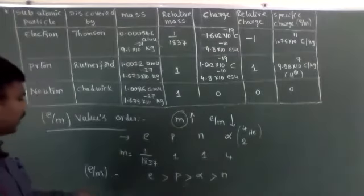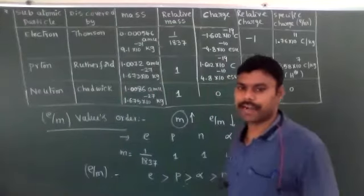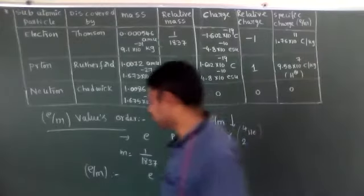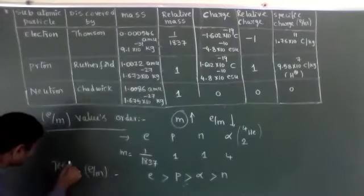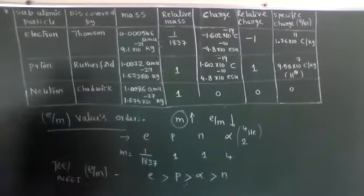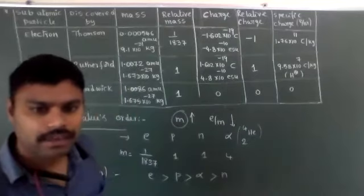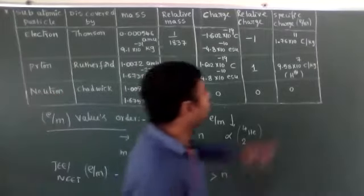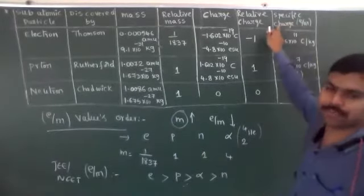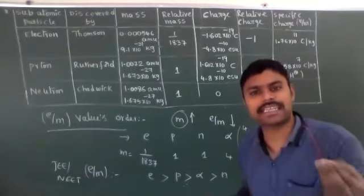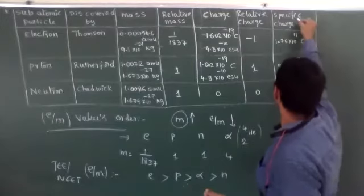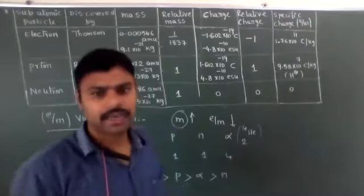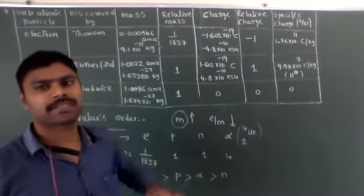So the specific charge order is: electrons have the most, then protons, then alpha particles, then neutrons. This is very, very important for JEE examination. The E/M value, known as specific charge, is the ratio of charge by mass. If mass increases, specific charge decreases.